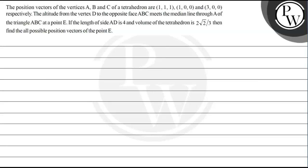Hello students, let's read the question. The position vector of the vertices A, B and C of a tetrahedron are (1,1,1), (1,0,0) and (3,0,0) respectively. The altitude from vertex D to the opposite face ABC meets the median line through A of triangle ABC at a point E. If the length of side AD is 4 and volume of tetrahedron is 2/3, then find all the possible position vectors of point E.